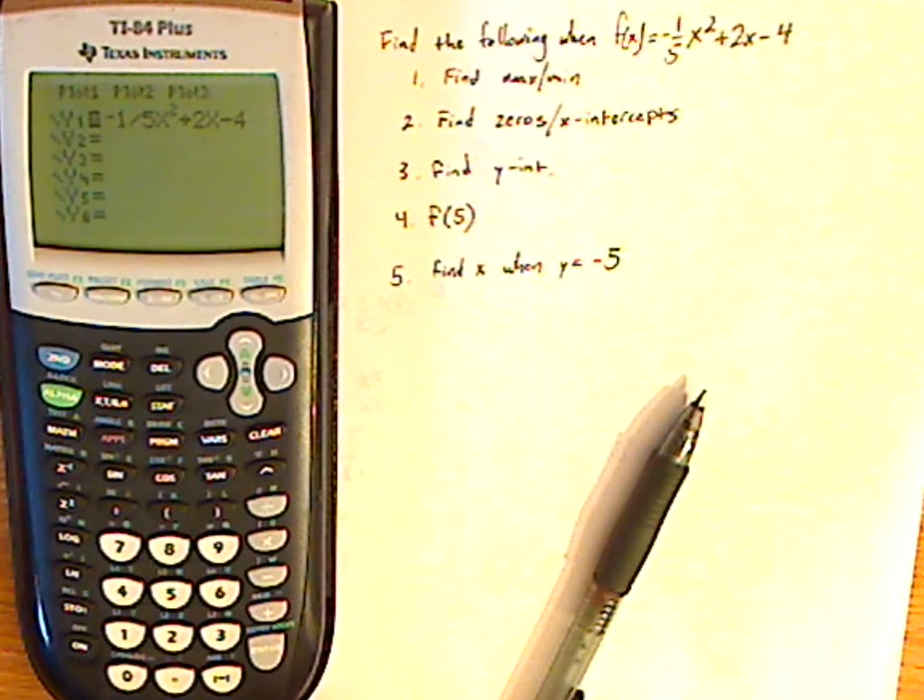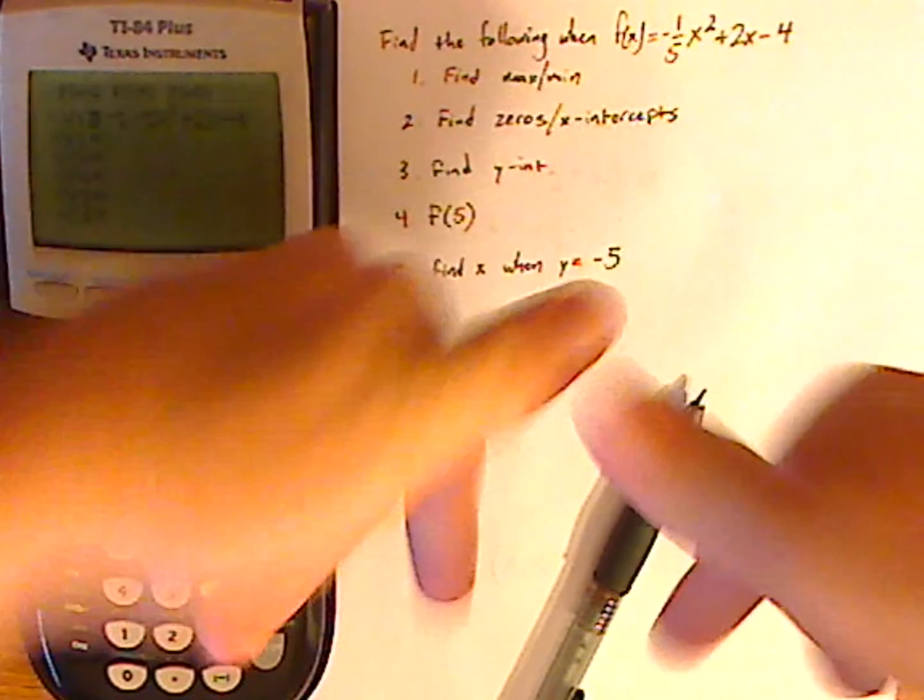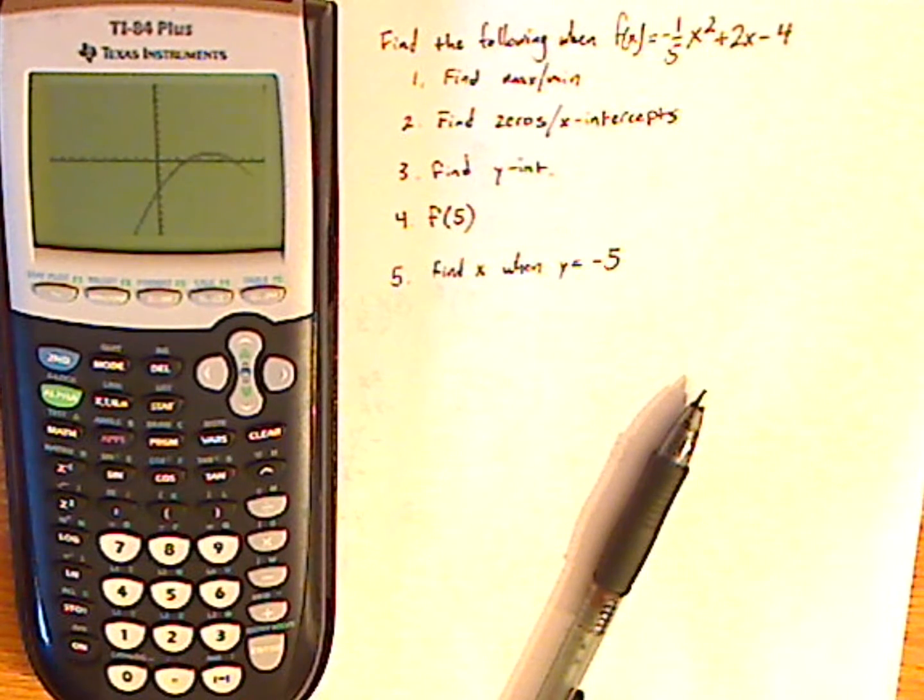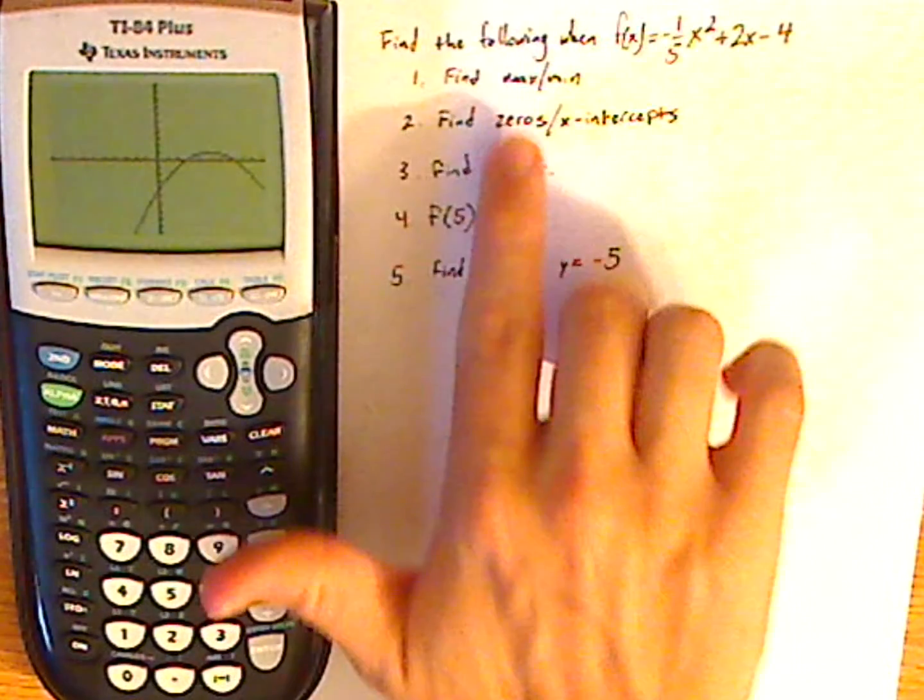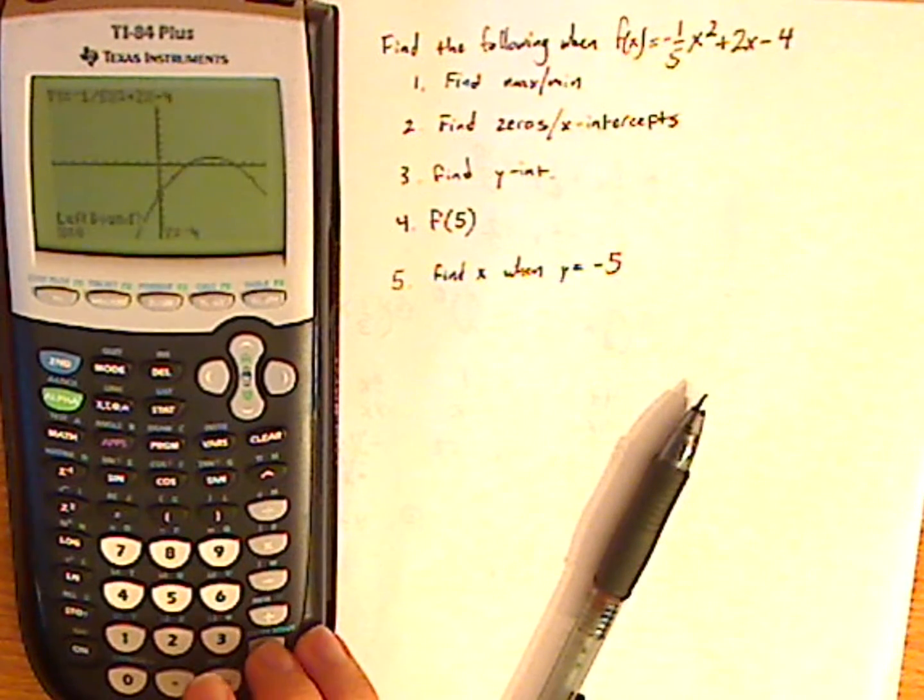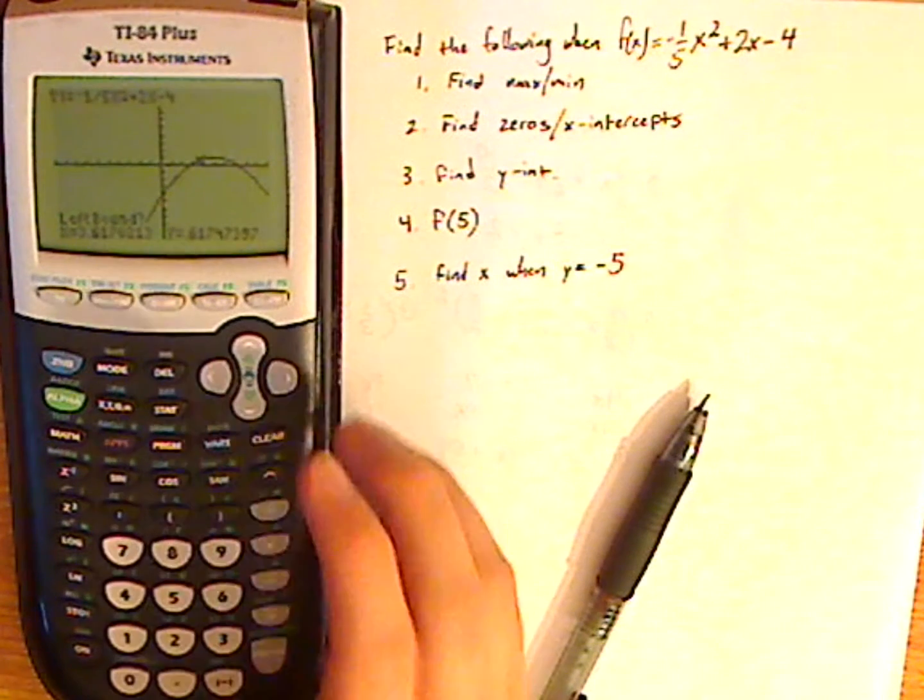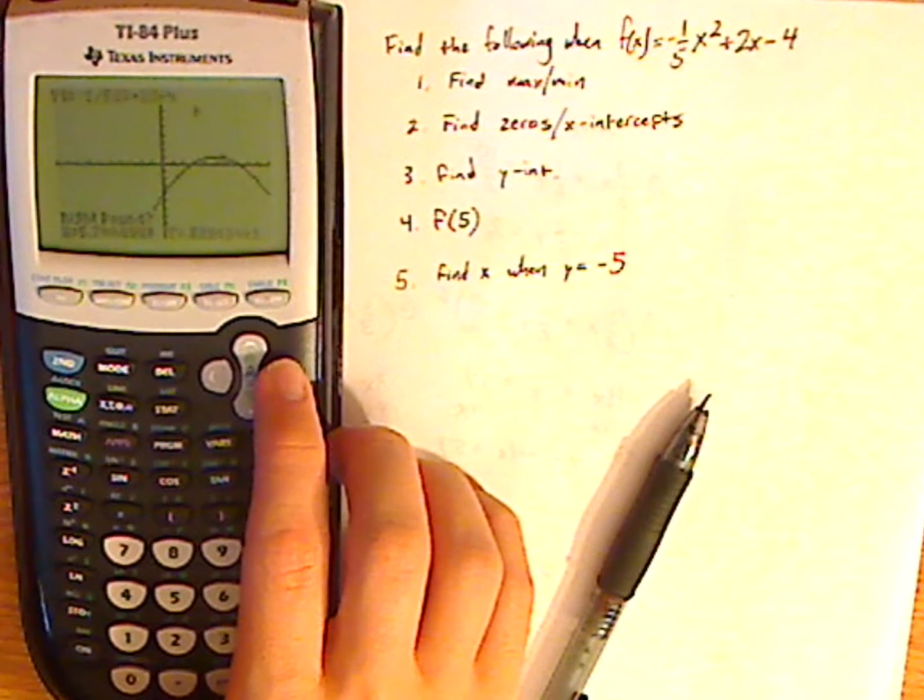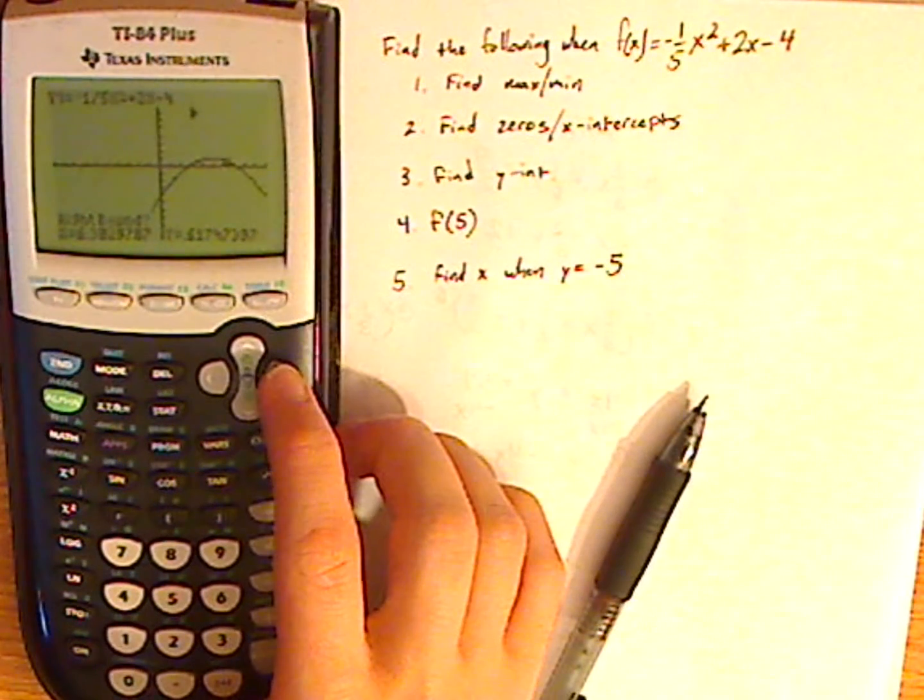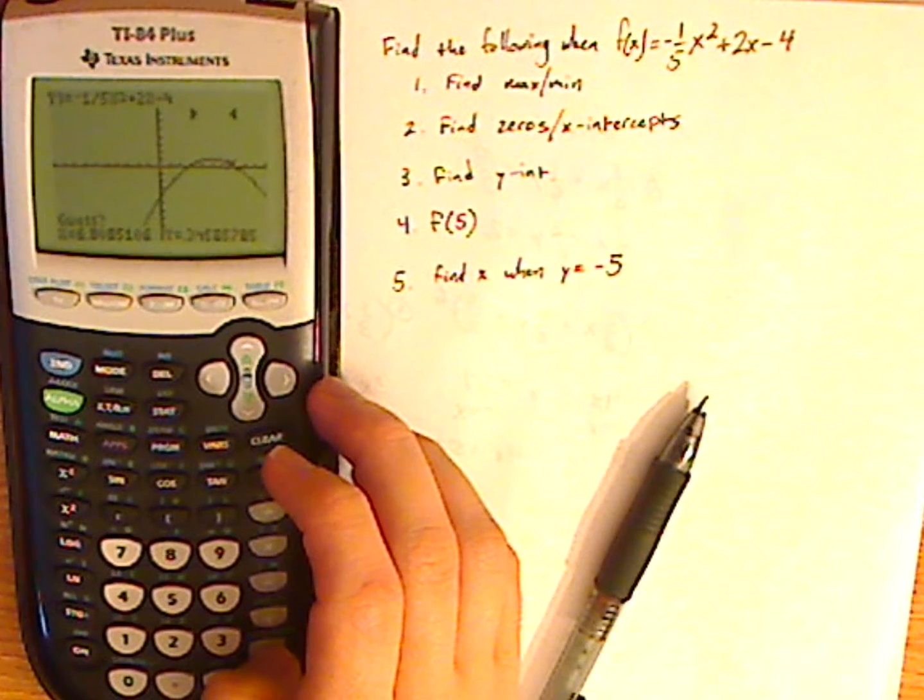Now let's first find the max or the min. I know because it's going to be facing downwards, it's going to go like this, so that means there's going to be a max. So when I graph it, it's going to be a max. So first let me find the max, go to 2nd, calc, looking for the max. Now you want to go to the left of the max, and try to get close to it. And then you're going to go right to it. These are your boundaries on where the max or the min is, because sometimes you can have more than one max or min. So that's why the calculator is asking for this. So you go right to it, click enter. Now your max should be in between them.